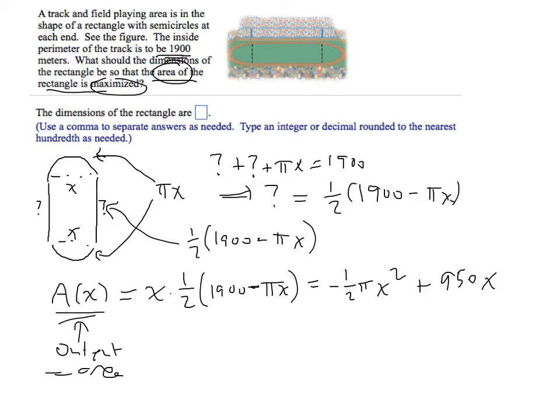There's no other term, there's no c term at all in this. If I use my formula for the vertex, the x-coordinate of the vertex is minus b over 2a, which in this case is minus 950 divided by 2a. The a is minus one half pi, so 2a is just minus pi. Therefore, the value of x is 950 over pi meters.